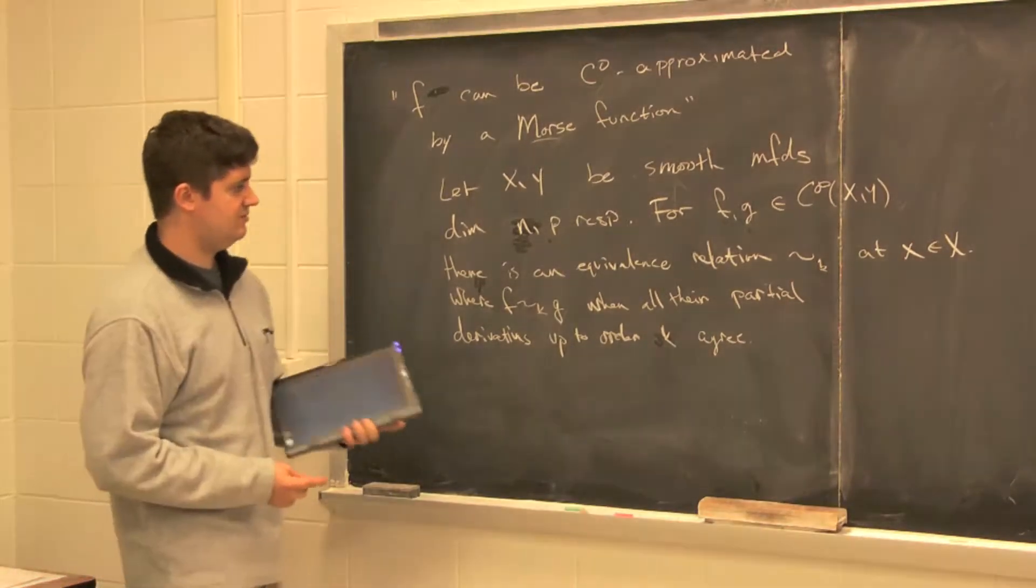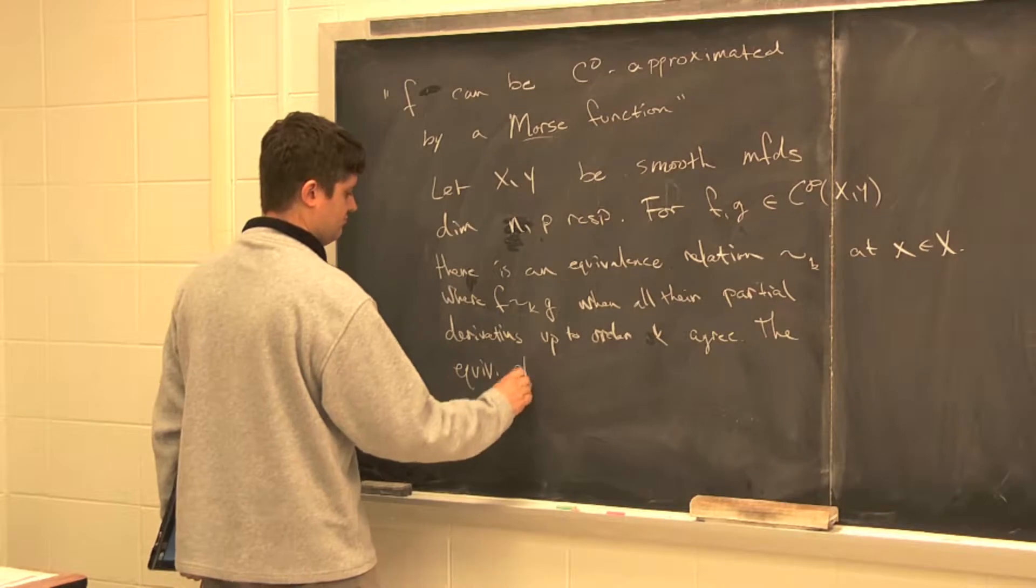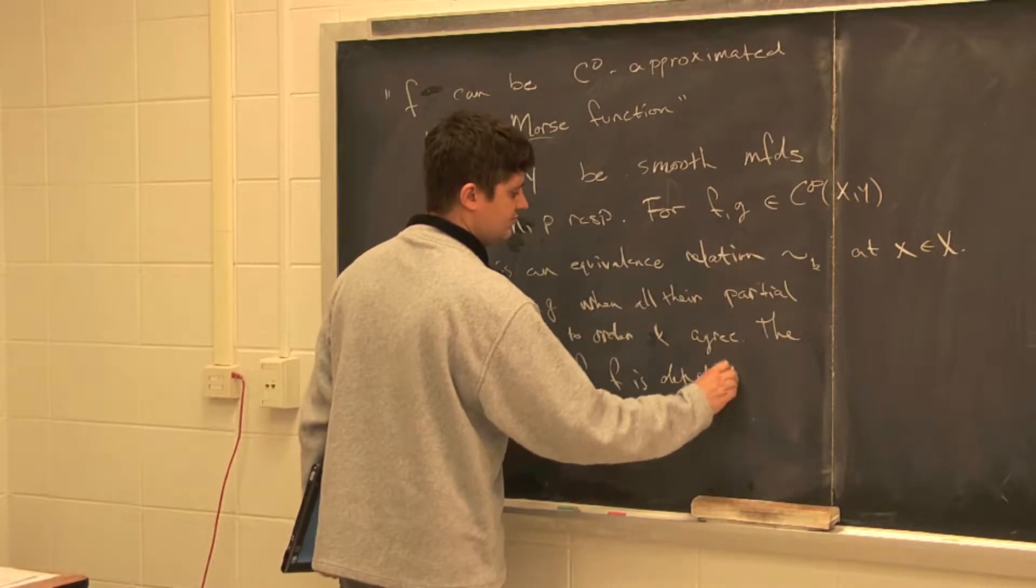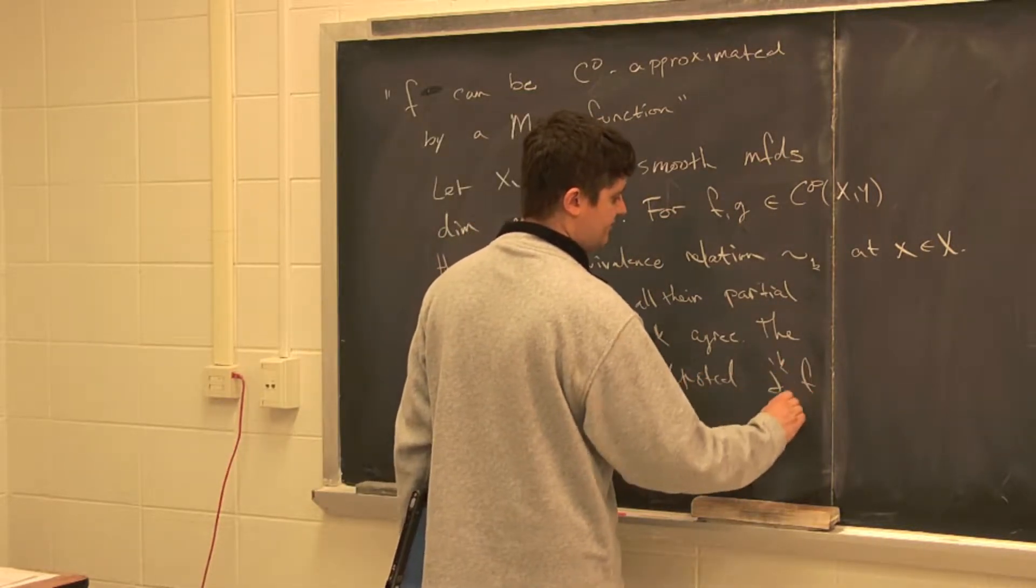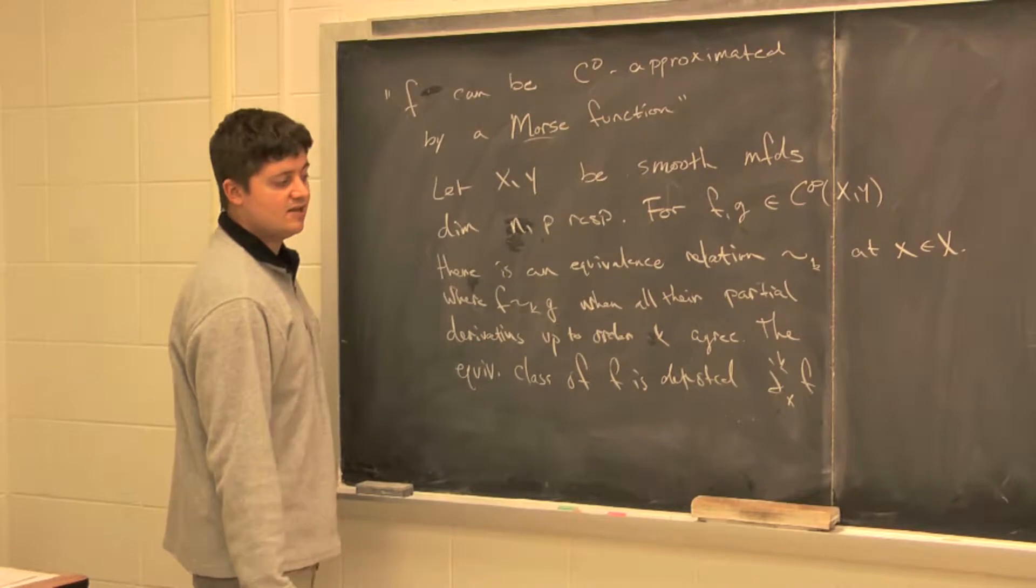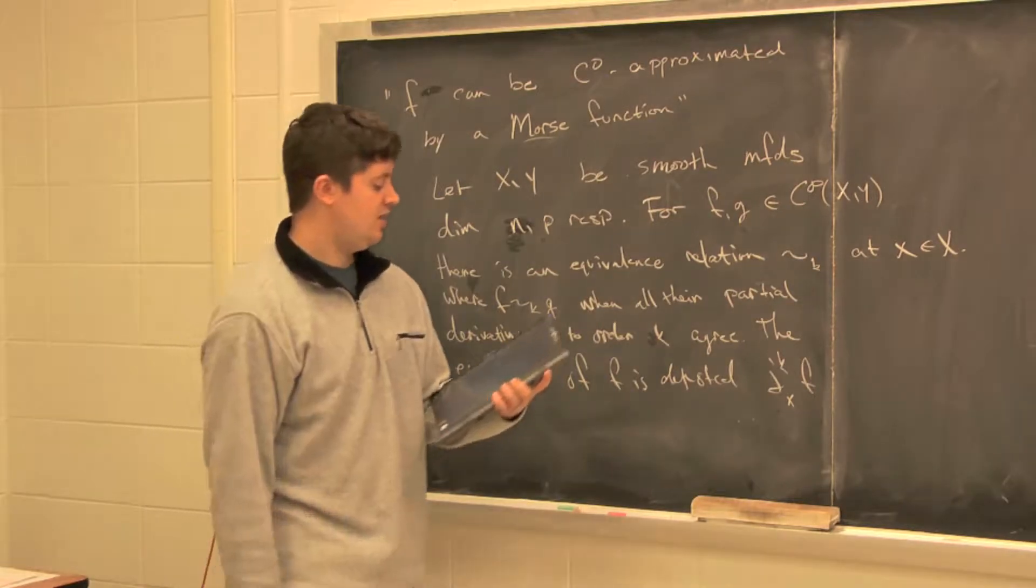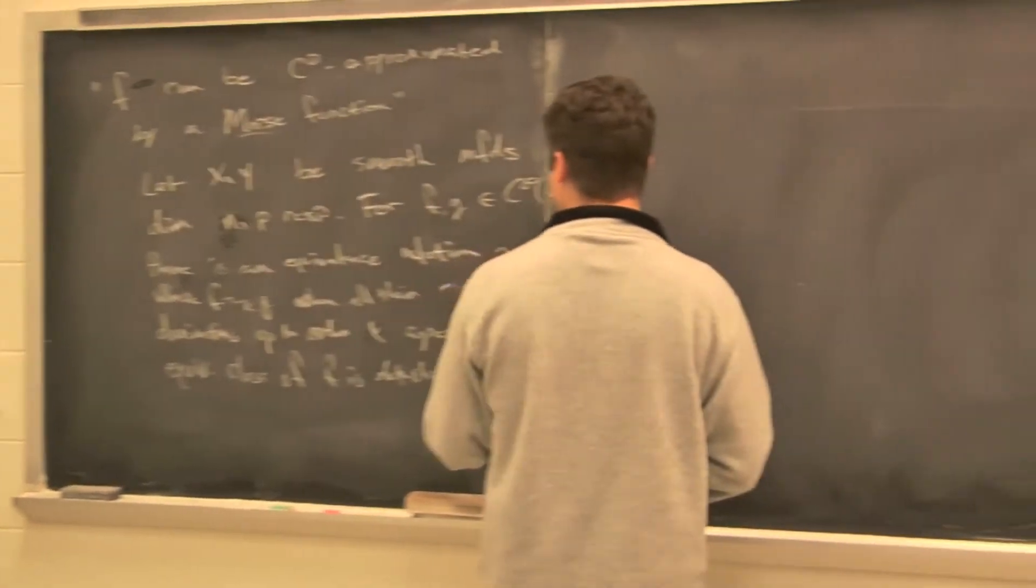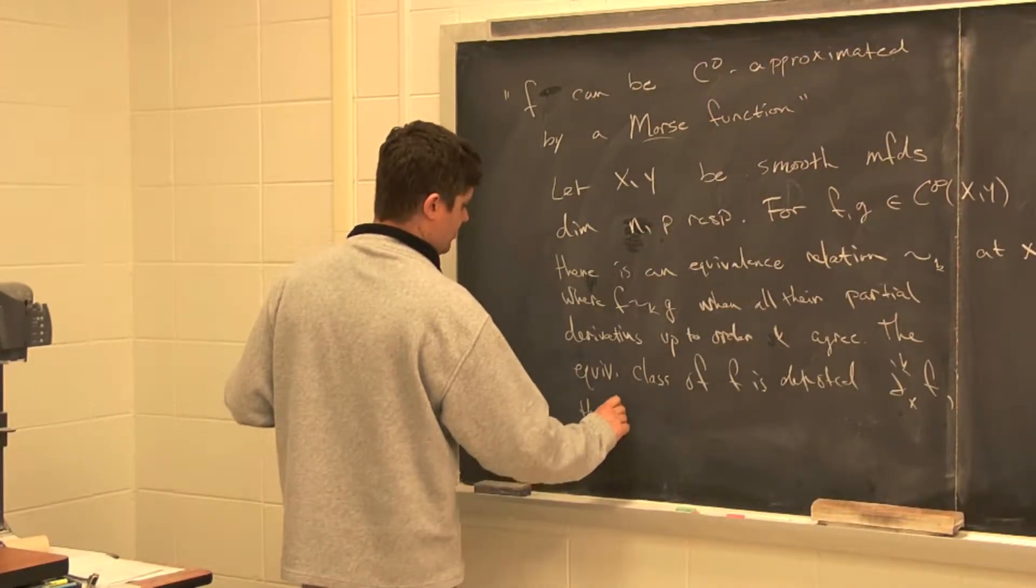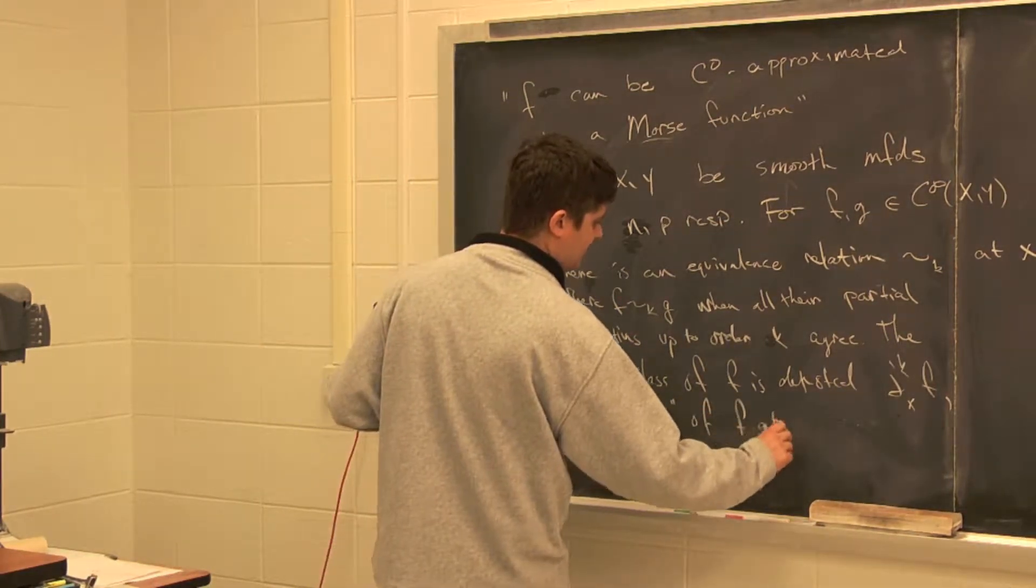The equivalence class of f is denoted j^k f at x. This is the collection of functions that equal f at x, and all the partial derivatives of order k equal f at x. So this is also called the k-jet of f at x.